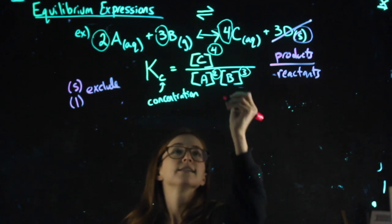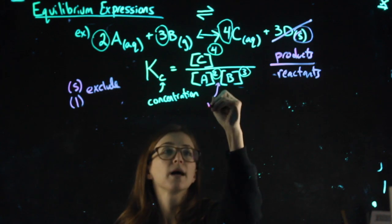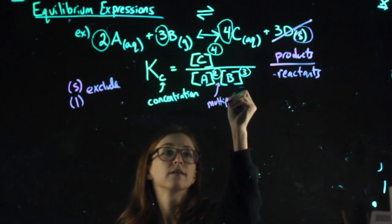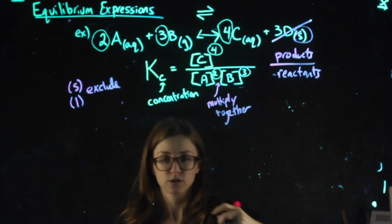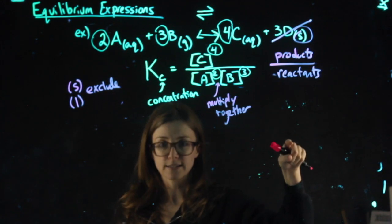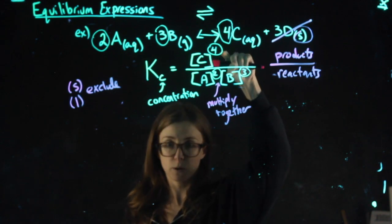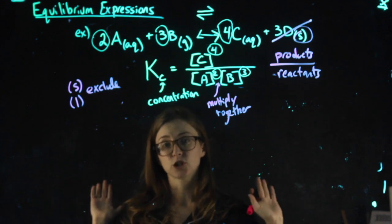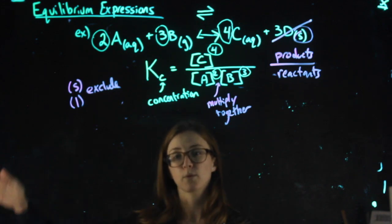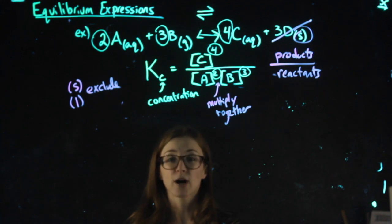And then another thing to realize is that A and B, there's no plus sign there. They're multiplying together. So, in summary, products over reactants, don't include solids and liquids. Coefficients become exponents. No addition signs. And that's it. That's just the equilibrium expression. What we'll work with next is how we plug numbers in, but go to the try problems. Let's do this.